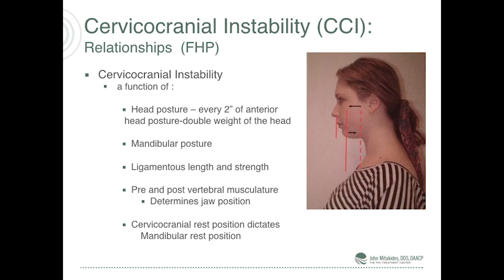Cervical cranium instability has to do with head posture. For every two inches your head comes forward, your head doubles in weight. iPhones, computers, and cell phones generate a lot of strain on the upper neck and back, especially the C5–C6 area. Mandibular posture dictates the position of the neck; the ligaments and length do that, and pre- and post-vertebral musculature and cervical cranial rest positions are all dictated by mandibular position.